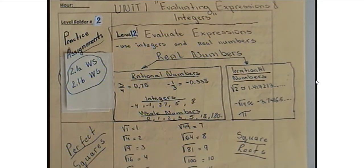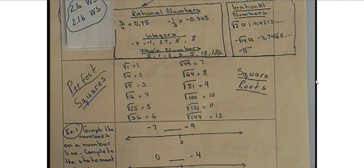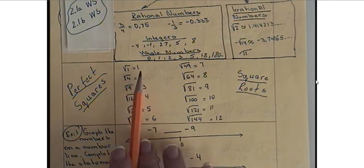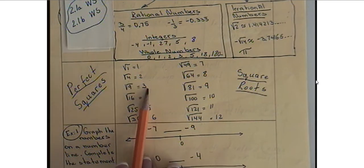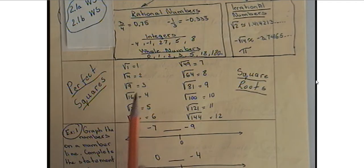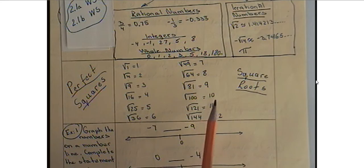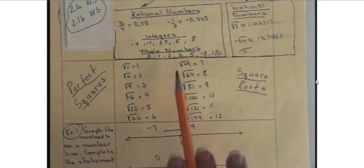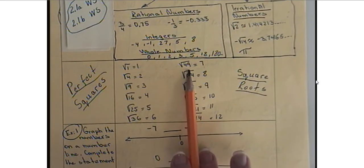Based on this classification, I will have some practice for you later and you will be able to classify numbers. Let's also look at what a perfect square is. Perfect squares are all the numbers under the square root that can be simplified to a whole number. So square root of 1 is 1, square root of 4 is 2, square root of 9 is 3, square root of 16 is 4, and so on — you are familiar with those.